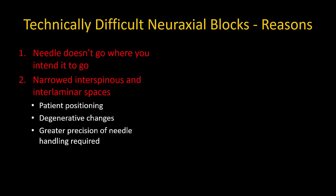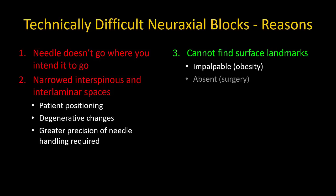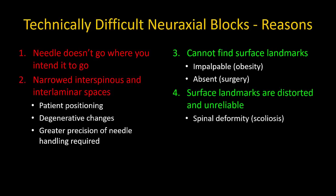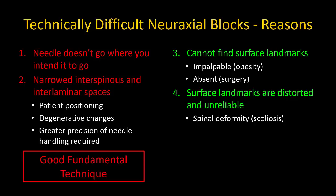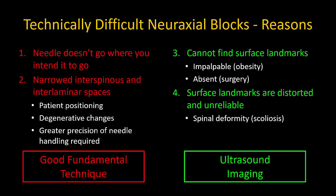In this setting, meticulous and precise technical skills are essential for success. Third, the usual surface landmarks, particularly the spinous processes, cannot be identified — they may be obscured by subcutaneous tissue or removed, as in the case of previous spinal surgery. Finally, landmarks may be present but distorted by congenital or degenerative deformity, chiefly scoliosis. The first and second causes are dealt with by good fundamental technique, which is the subject of this video. The third and fourth causes can be effectively addressed with pre-procedural ultrasound imaging, discussed in other videos.